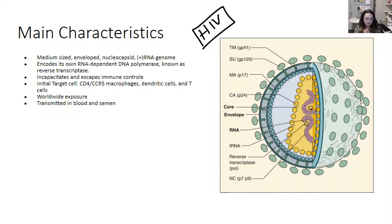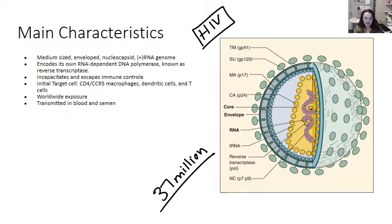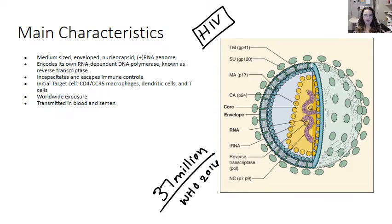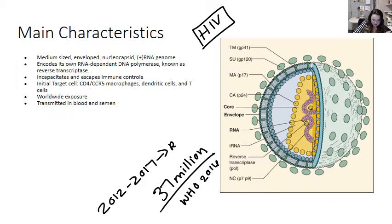There are roughly 37 million people worldwide who are currently infected with HIV — that was the World Health Organization statistic in 2016. About 38,000 people received an HIV diagnosis within the United States. Actually, that rate has remained stable pretty much since 2012 through 2017, which is really great news. It indicates that some of our public health initiatives are working and that antiretroviral therapy is functioning in patients who know their HIV status.